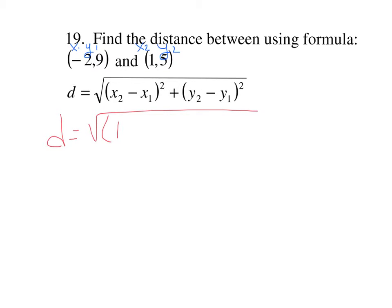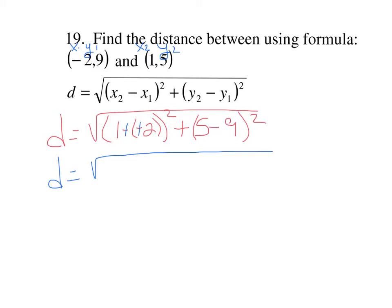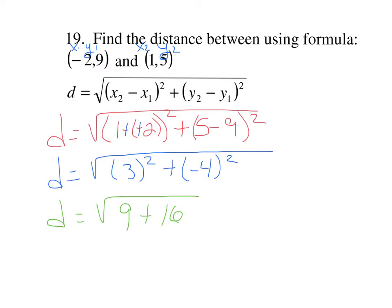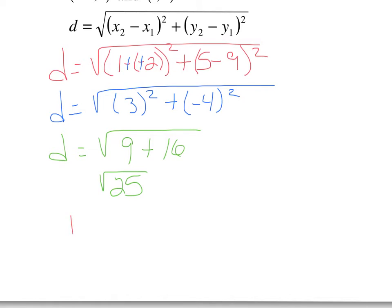We fit them into the formula: x2 minus x1, plus y2 minus y1. Simplifying — the two negatives become a plus. 2 plus 1 is 3, so this is 3 squared. 5 minus 9 is negative 4, so that's negative 4 squared. 3 squared is 9, negative 4 squared is 16. This becomes the square root of 25, which is 5. So the distance between those two points is 5 units.